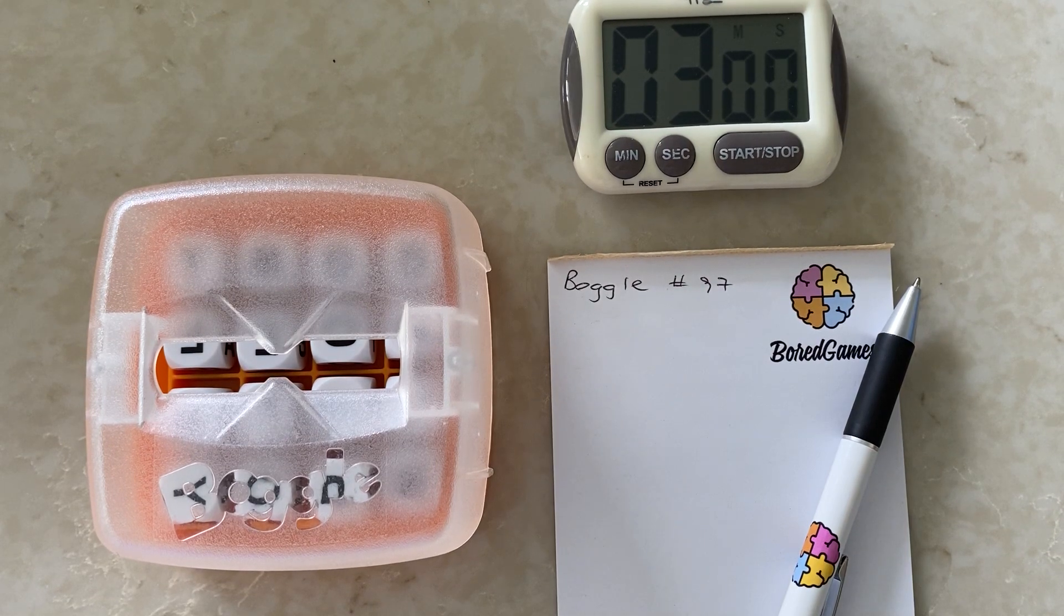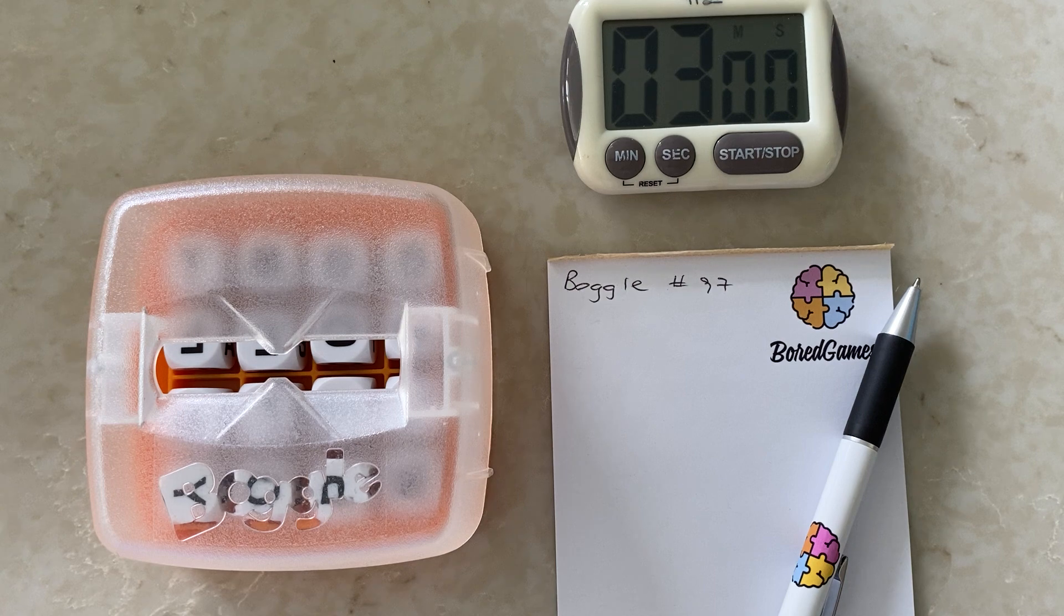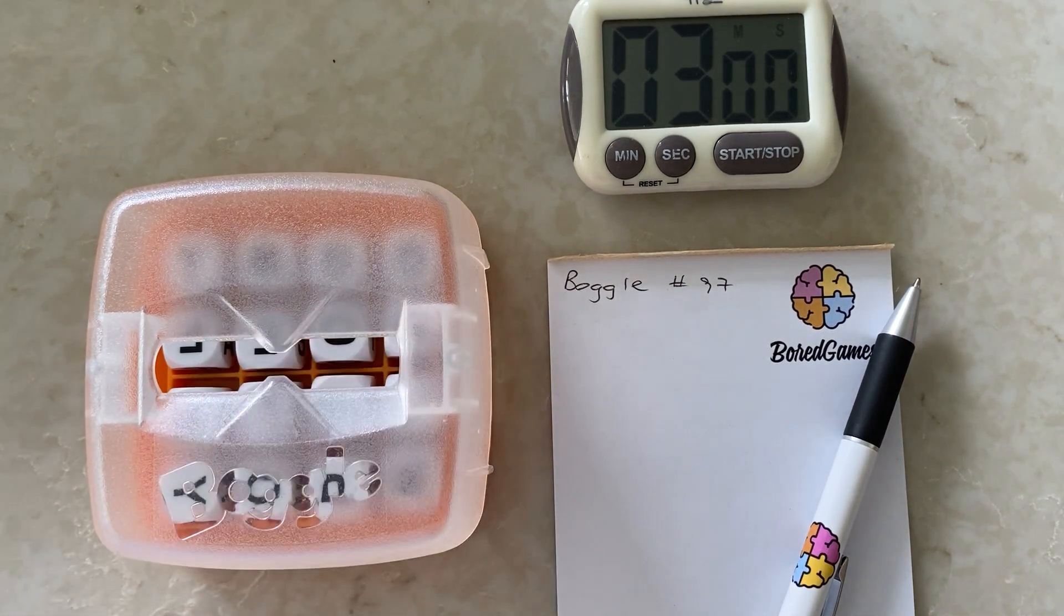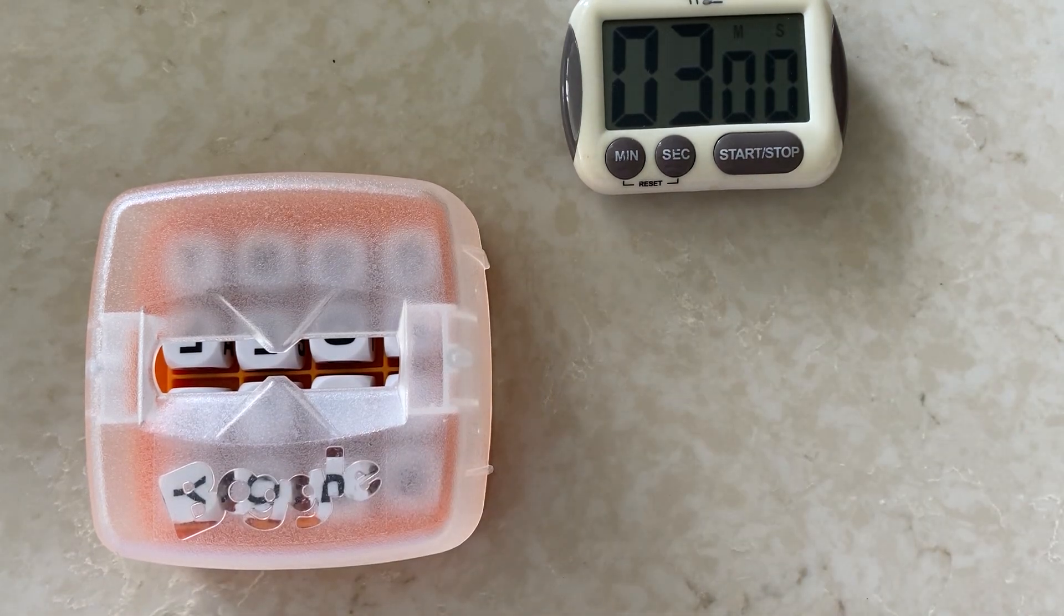Hi there, welcome to Board Games. My name is Rebecca and today we're playing Boggle Game number 97. Three minutes on the clock. We'll try to make as many words as we can from this here grid. I will make my words off-camera but say them out loud.